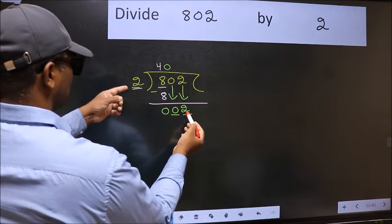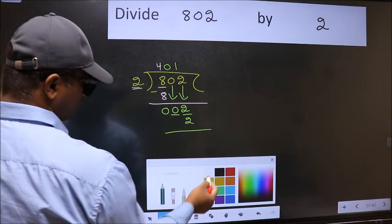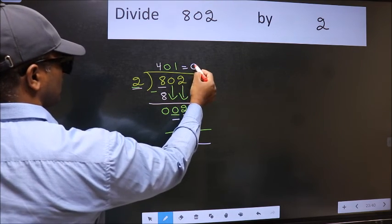Now 2. When do we get 2 in the 2 table? 2 once 2. Now we should subtract. We get 0. So this is our quotient.